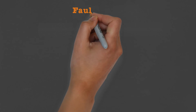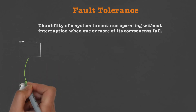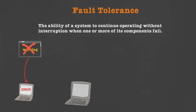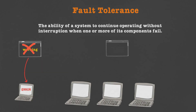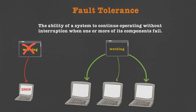If I break my hand I will go to the hospital to receive immediate treatment. Next we talk about the concept of fault tolerance. If a system fails to continue operating after a failure of one of its components, then it's considered to have no fault tolerance. On the other hand, if a system continues to operate properly after a failure of one of its components, then it's considered fault-tolerant.